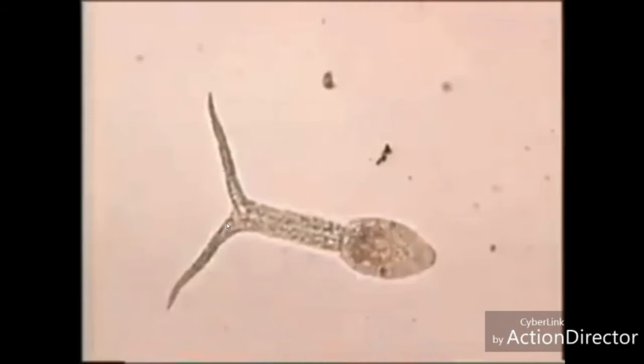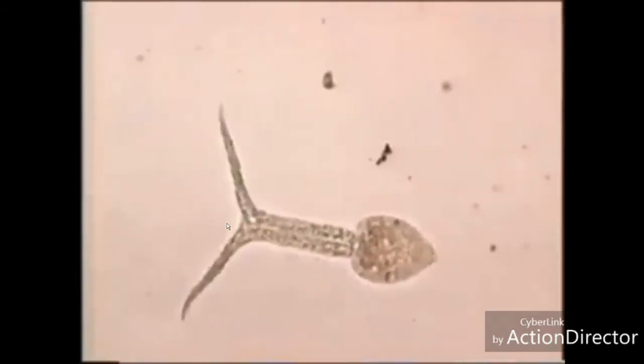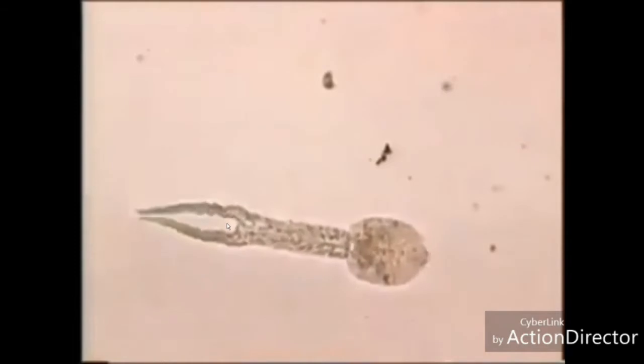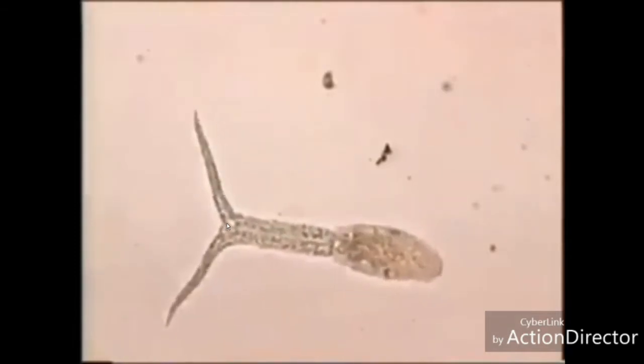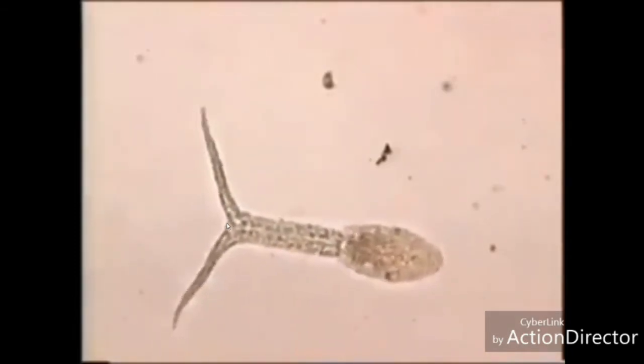How does this stage enter the human host? It enters our bodies via skin penetration. The elongated body has about five pairs of penetration glands in the case of Schistosoma mansoni, and six pairs in the case of Schistosoma haematobium.